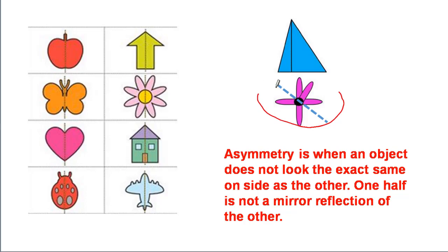Asymmetry is when an object does not look the exact same on one side as the other. One half is not a mirror reflection of the other. This is an example of an asymmetrical object. When you divide the object into two, the image on the left side is not the mirror image of the right side.